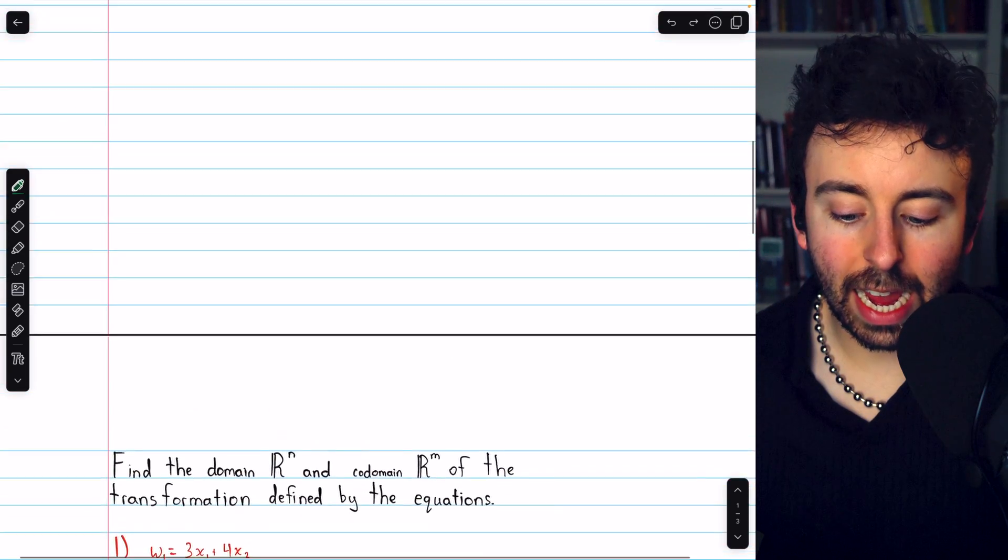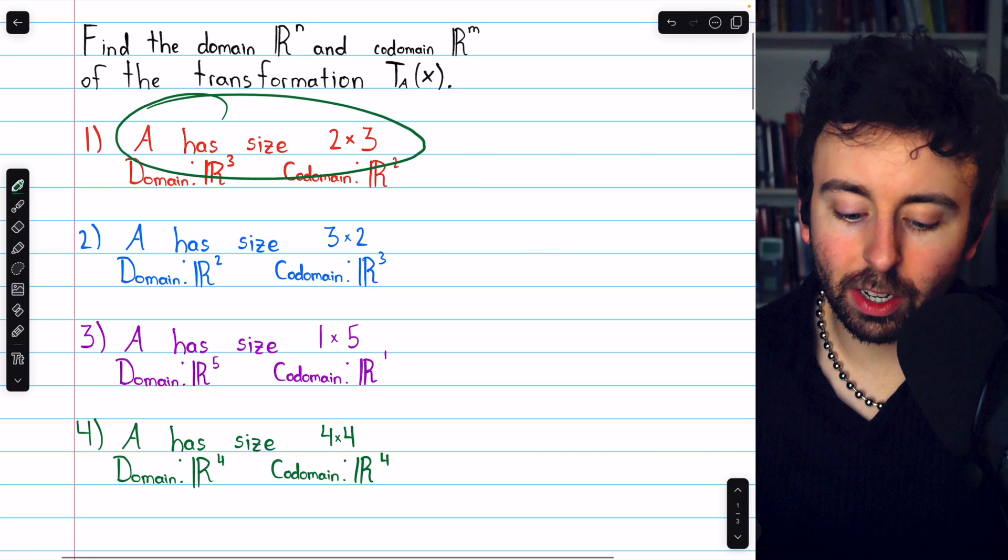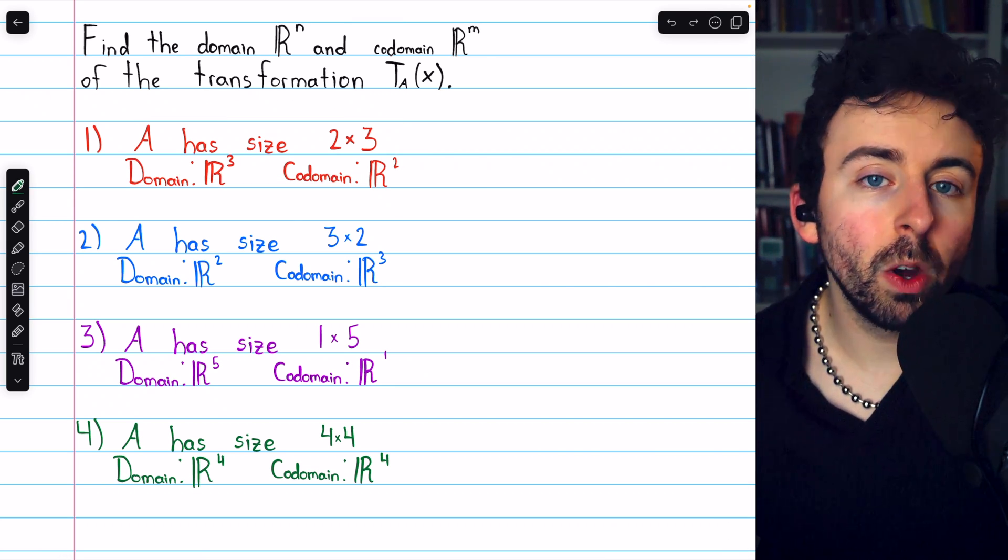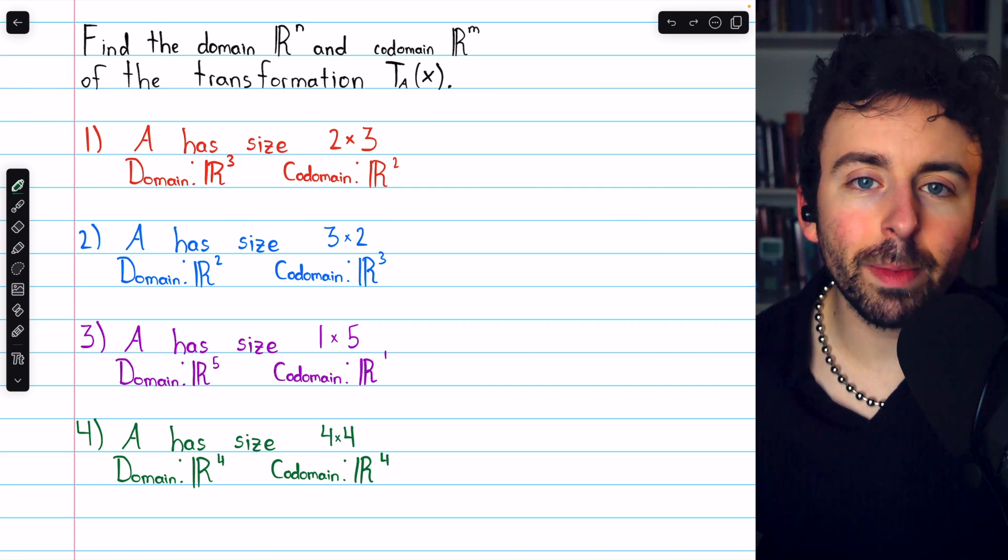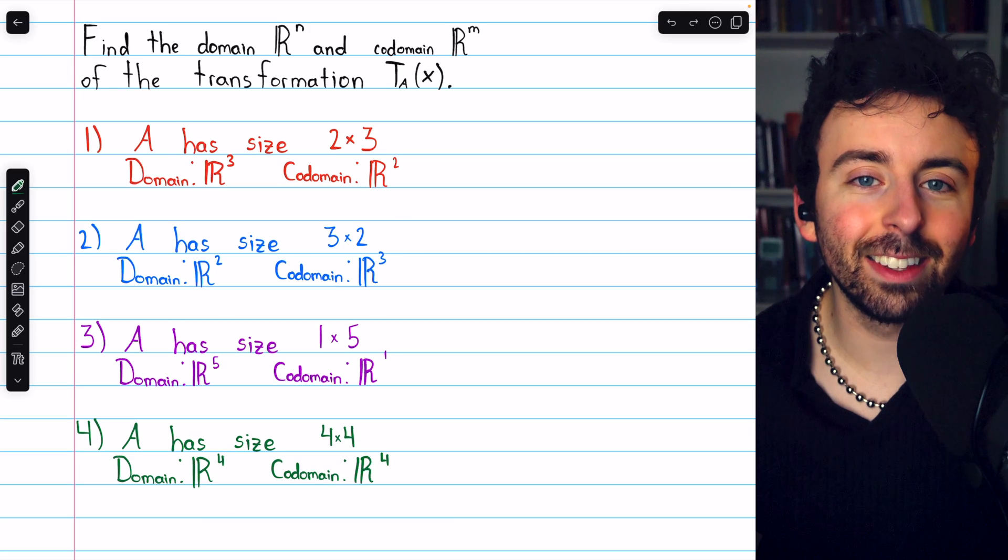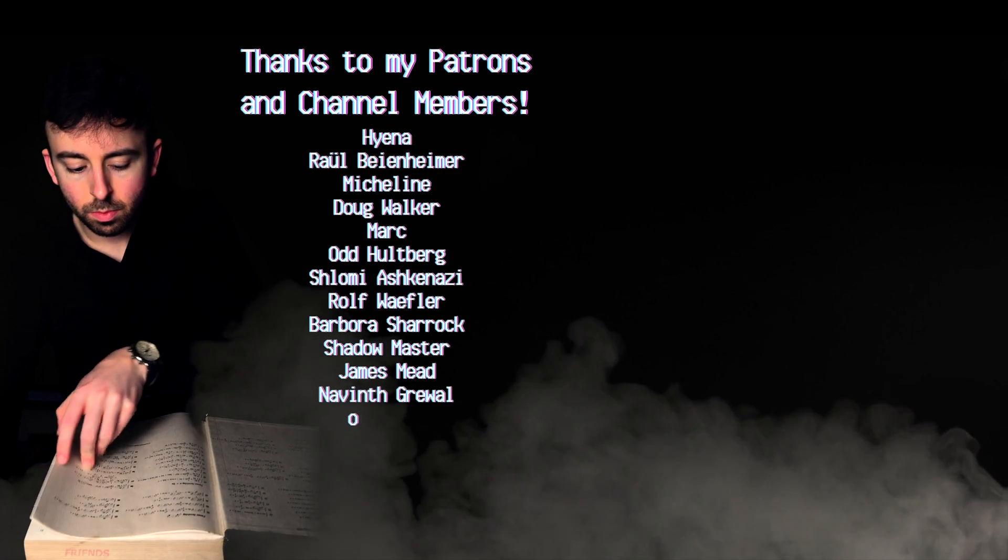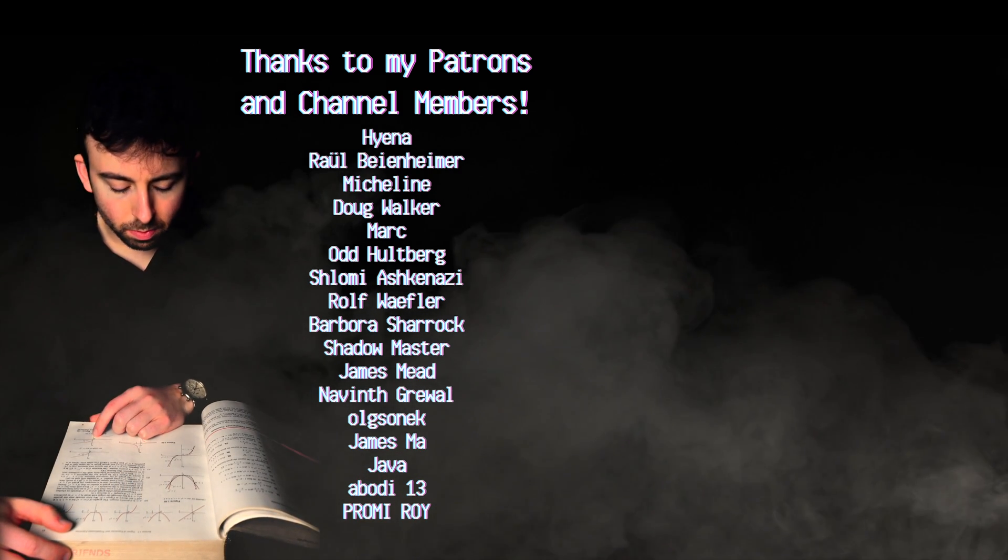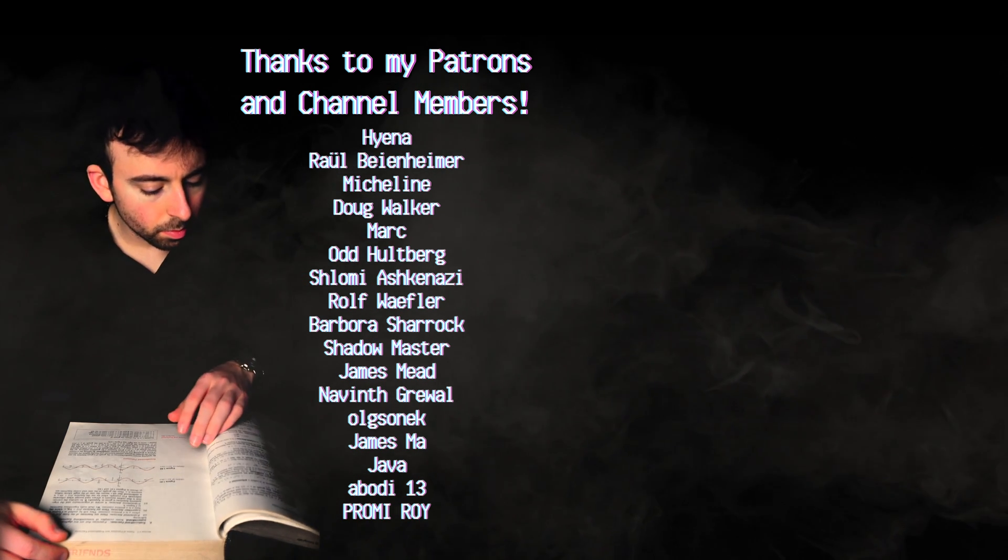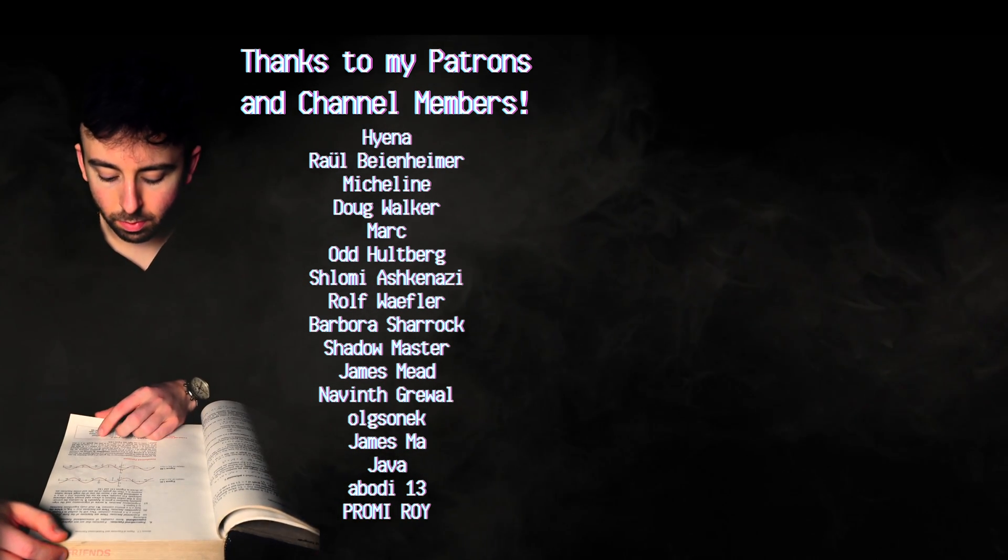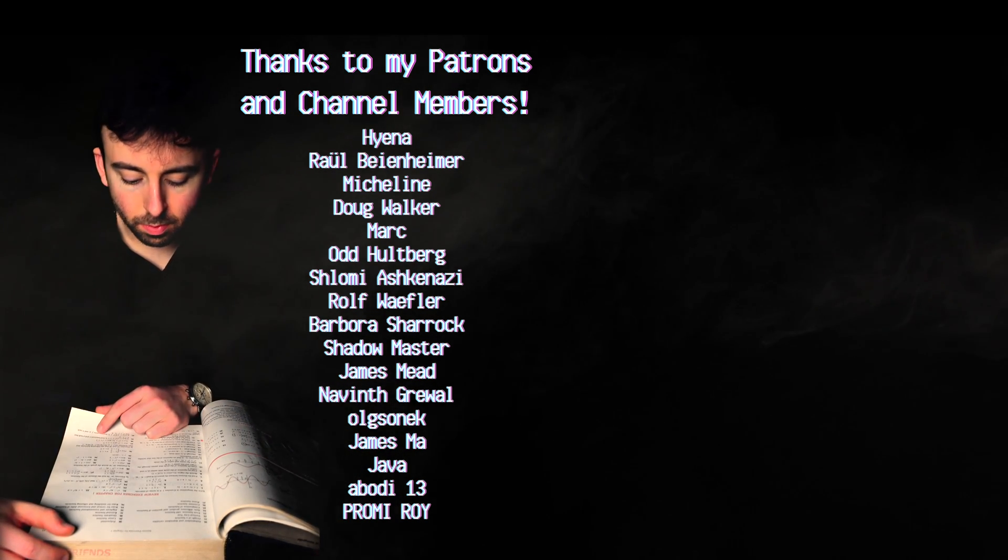So that's how we determine the domain and codomain from some information about transformations, whether it be the dimensions of the matrix for the matrix transformation or simply the transformation equations. Let me know in the comments if you have any questions and be sure to check out my linear algebra course and linear algebra exercises playlists in the description for more. Thanks for watching.